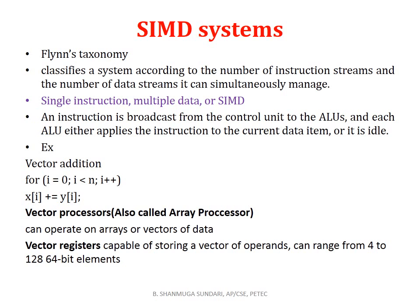Vector processors include array processors, which can operate on an array or vector of data. A vector register is capable of storing a vector of operands ranging from 4 to 128 64-bit elements. In a scalar processor, individual data elements are operated on, whereas a vector processor operates on vectors of data.